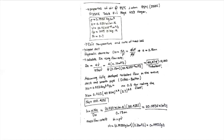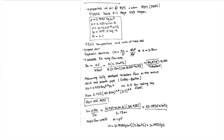I'm assuming a smooth pipe because the problem doesn't tell us the material or surface condition of the duct. If the problem specified a material like new stainless steel polished surface, you could get the roughness, calculate the relative roughness (roughness divided by hydraulic diameter), go to the Moody chart or use the Haaland equation to get the friction factor, and then use a Nusselt correlation that involves the friction factor correction. Since we don't know, I'll assume smooth pipe.